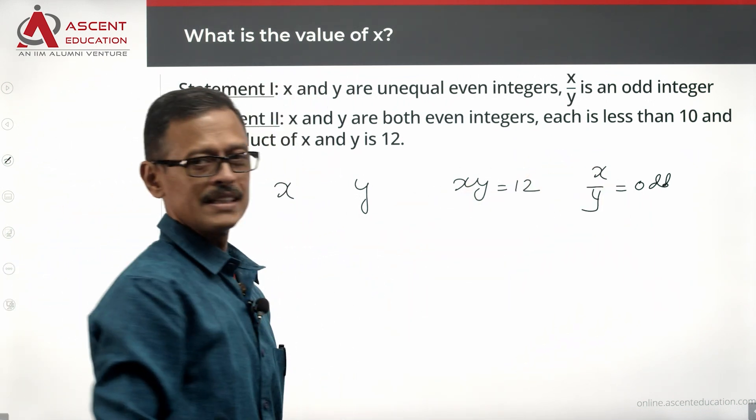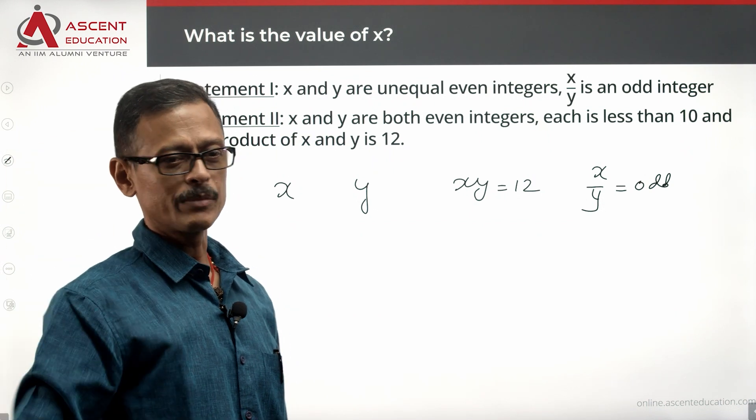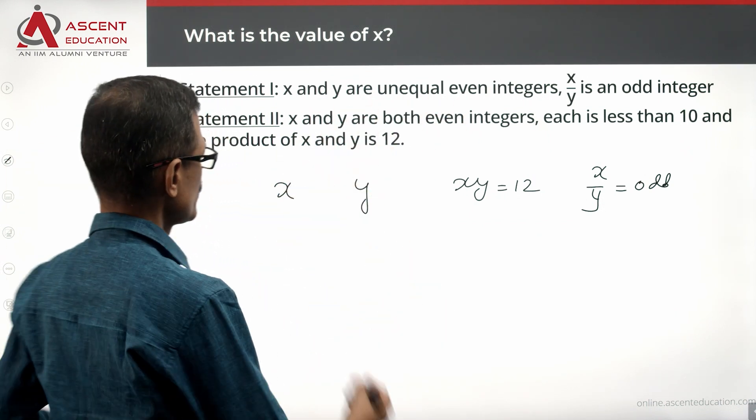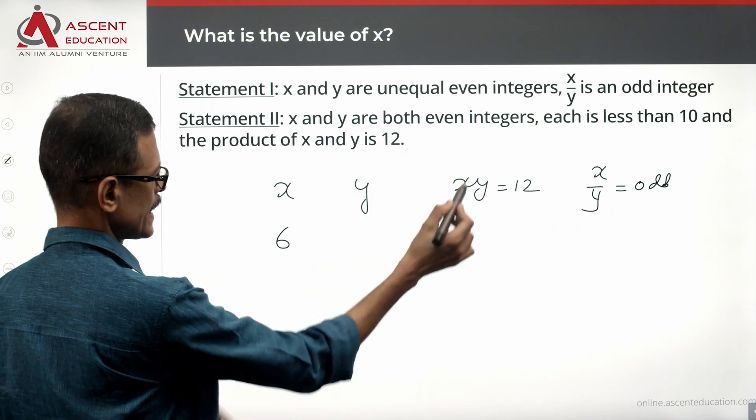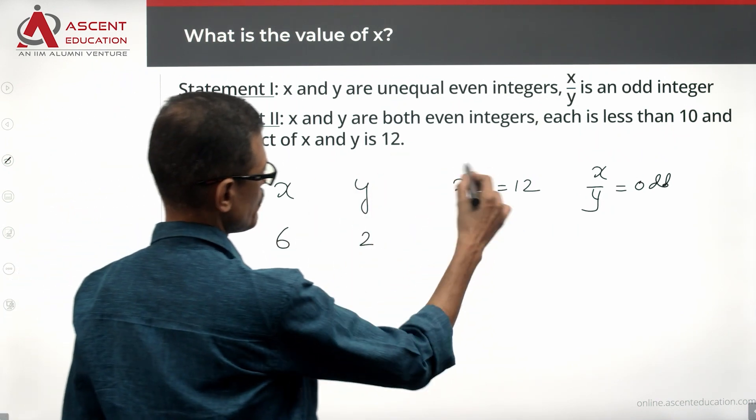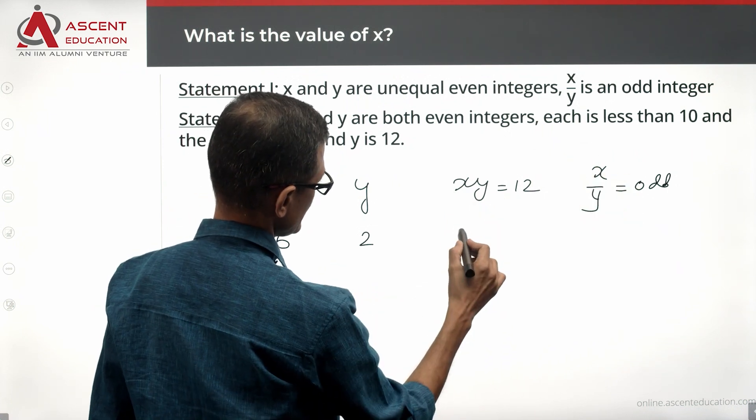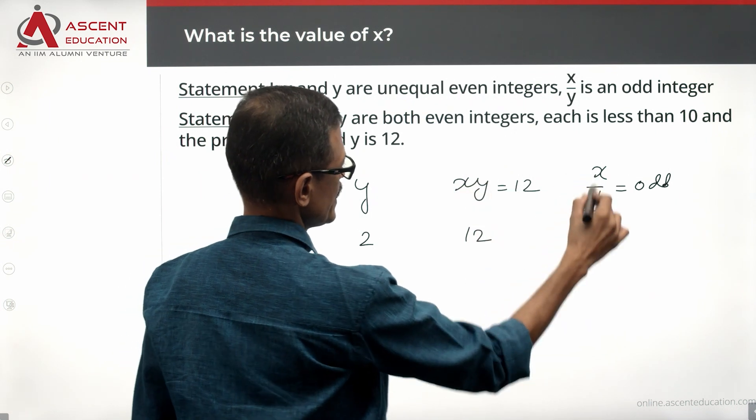So X by Y should be an odd integer, which means X should be a number which is greater than Y, otherwise it's 3, 5, or 1. Because it's unequal, this has to be X should be greater than Y. 6 and this would be 2. We'll see what happens to X times Y. X times Y is such that magnitude-wise this is greater. X times Y is equal to 12, brilliant. X by Y is equal to 3, super.